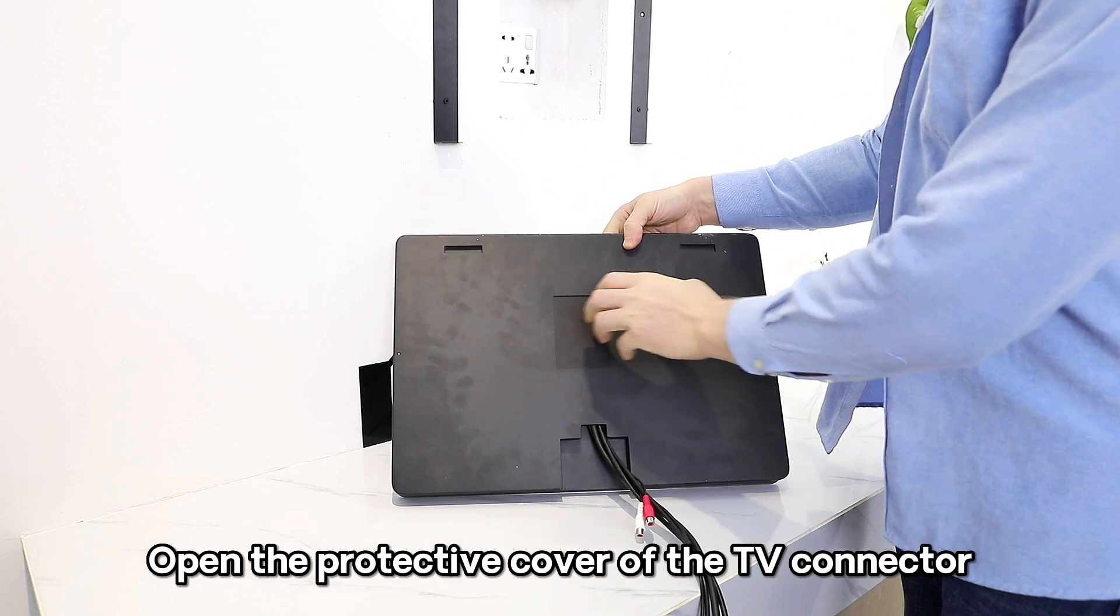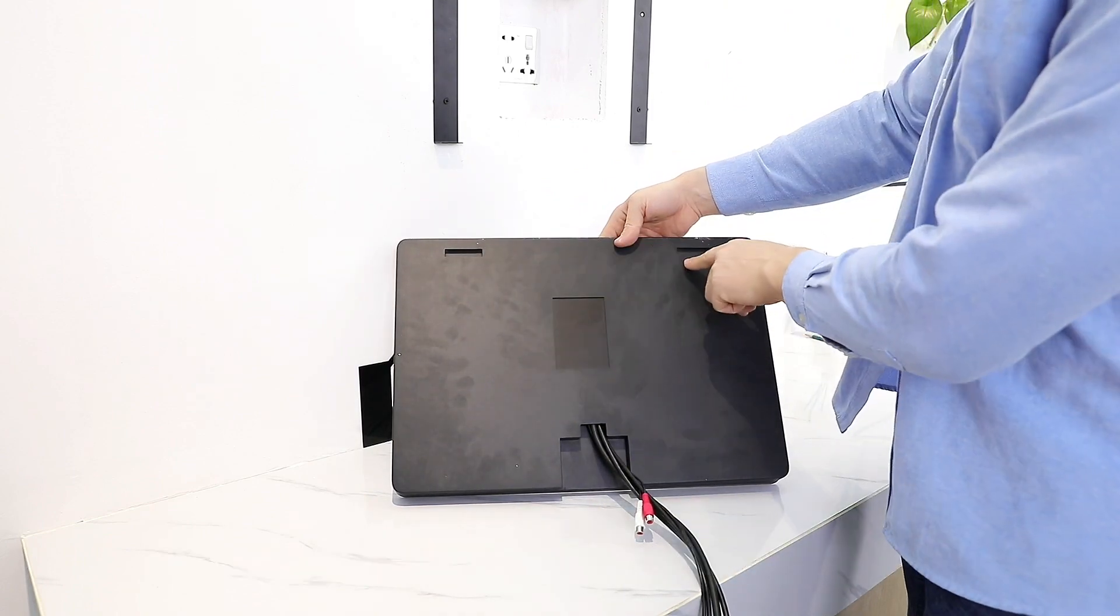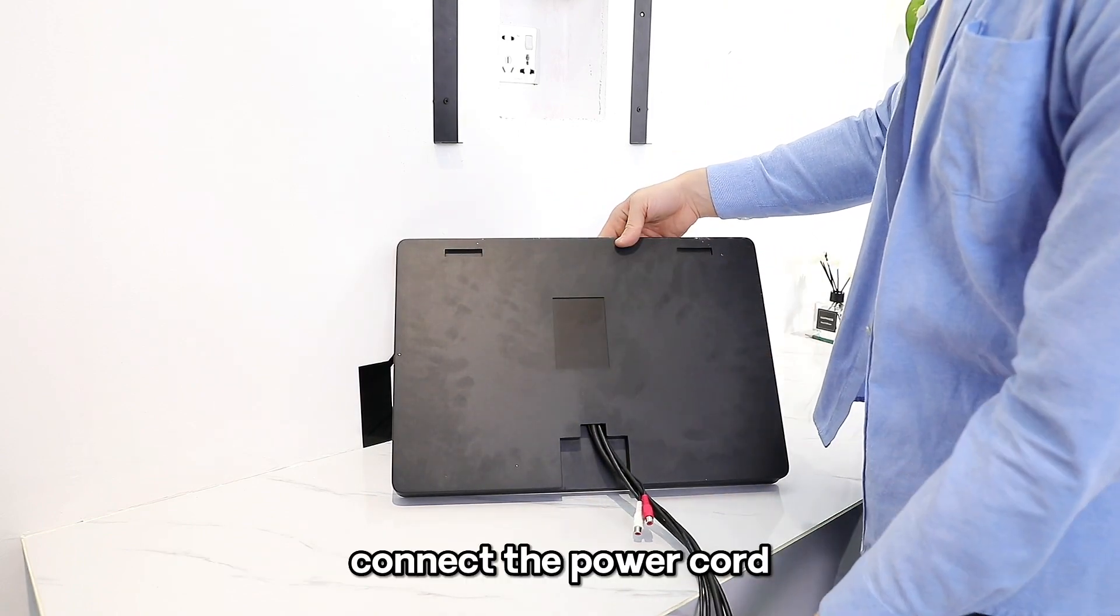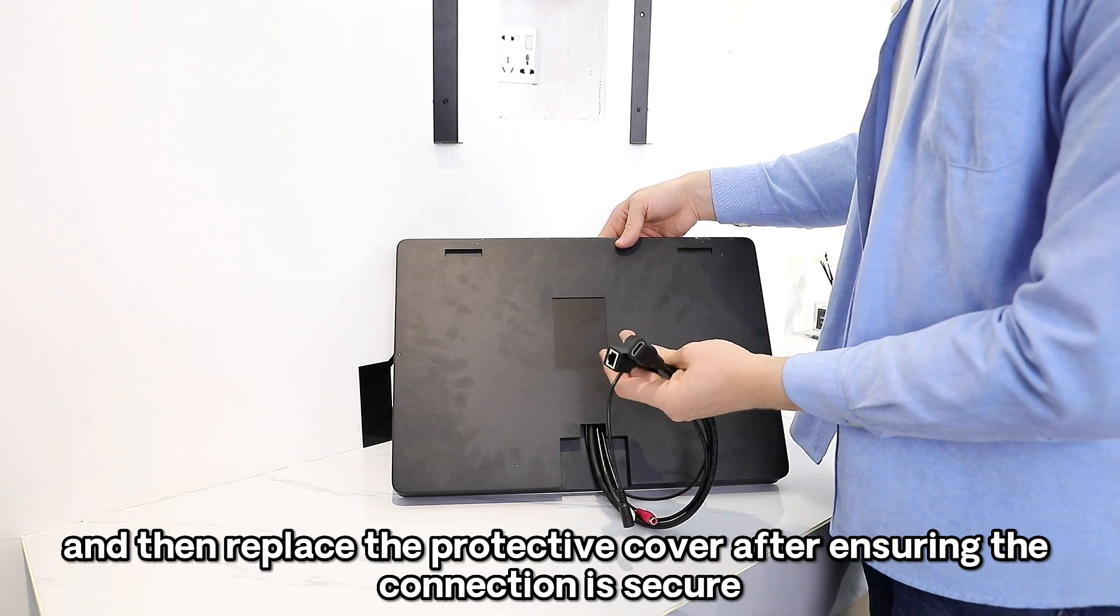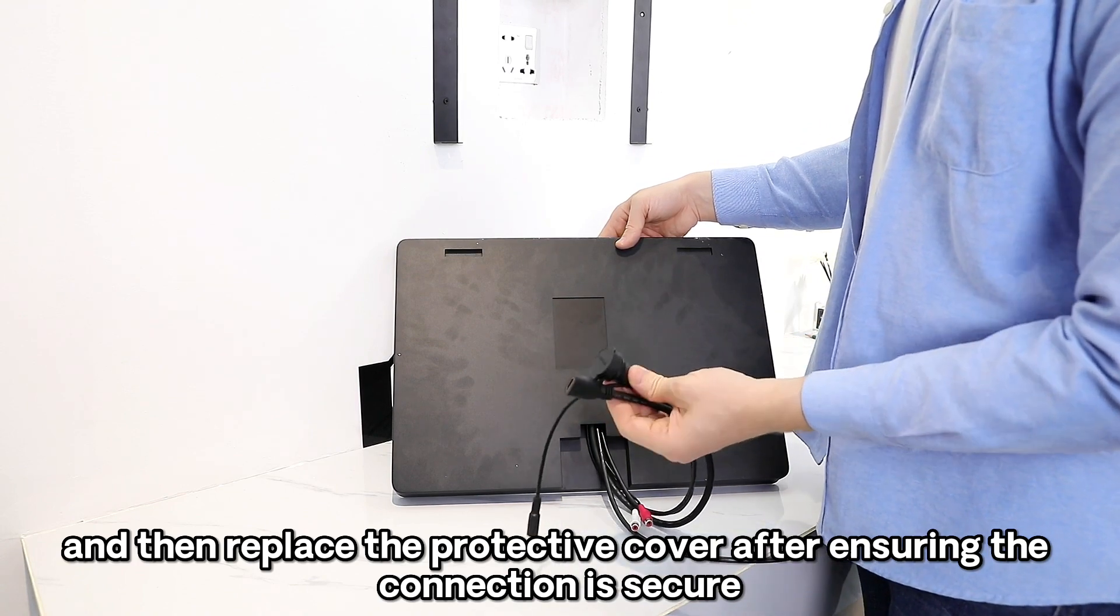Open the protective cover of the TV connector. Connect the power cord and then replace the protective cover after ensuring the connection is secure.